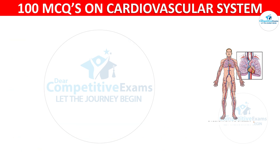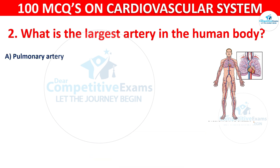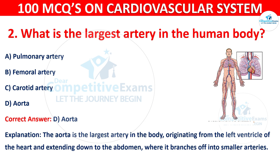Q2. What is the largest artery in the human body? Options are: pulmonary artery, femoral artery, carotid artery, or aorta. The correct answer is D — aorta. The aorta is the largest artery in the body, originating from the left ventricle of the heart and extending down to the abdomen, where it branches off into smaller arteries.